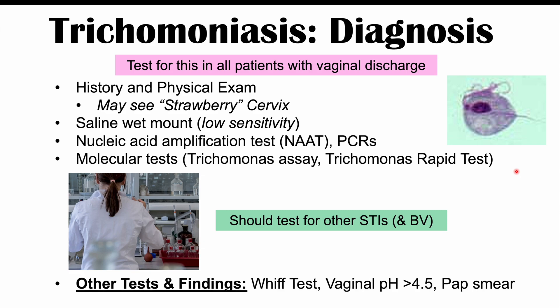Other diagnostic findings include the whiff test, where a drop of KOH (potassium hydroxide) is placed onto the vaginal discharge — a strong fishy smell indicates a positive result, which is more characteristic of bacterial vaginosis than trichomoniasis. An elevated vaginal pH greater than 4.5 can also be noted, and Trichomonas vaginalis organisms may actually be seen on pap smear as well.